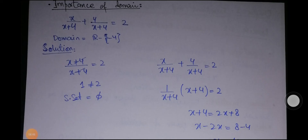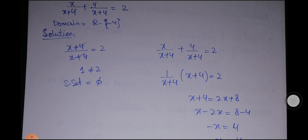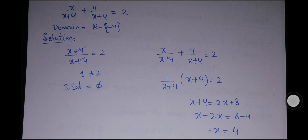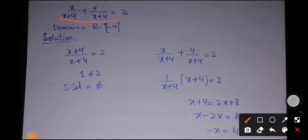Now we discuss why domain is important. Consider the equation 'x over (x+4) plus 4 over (x+4) equals 2.' The domain is all real numbers except minus 4, since x plus 4 equals 0 at x equals minus 4. Taking the LCM on the left side gives (x plus 4) over (x plus 4) equals 2, which simplifies to 1 equals 2 — a false statement with no variable remaining. Therefore, the solution set is the null set.